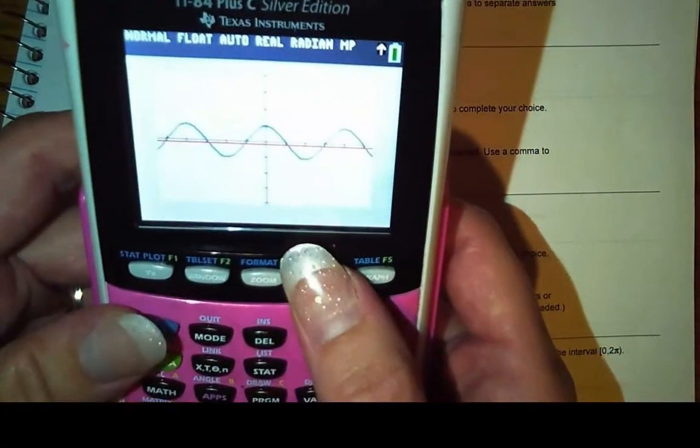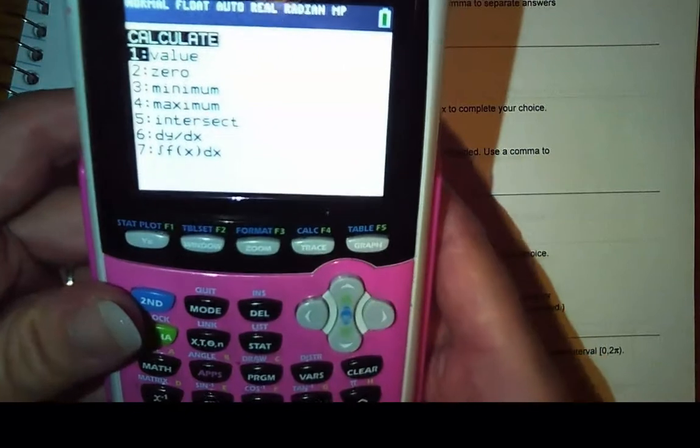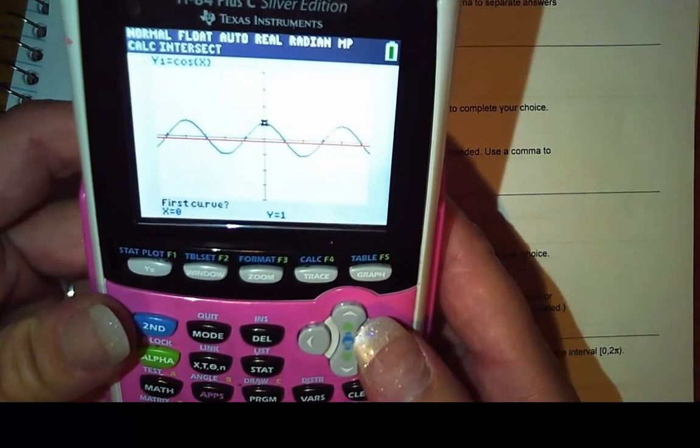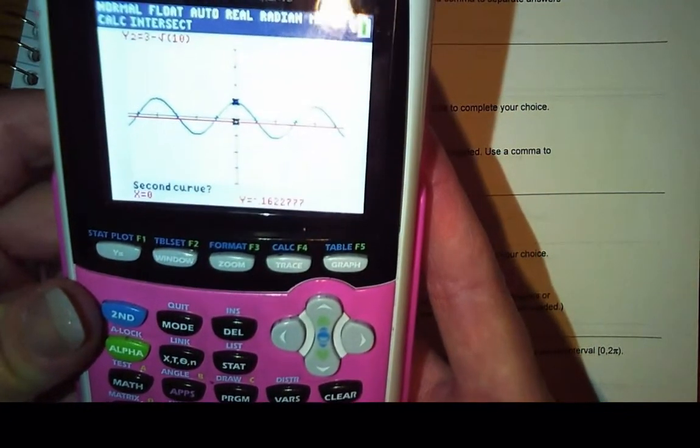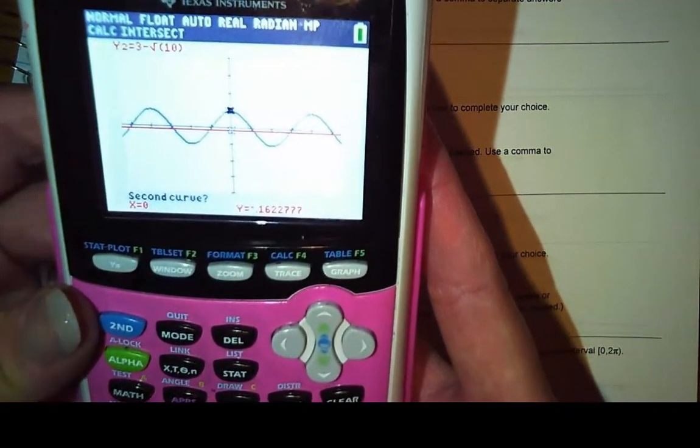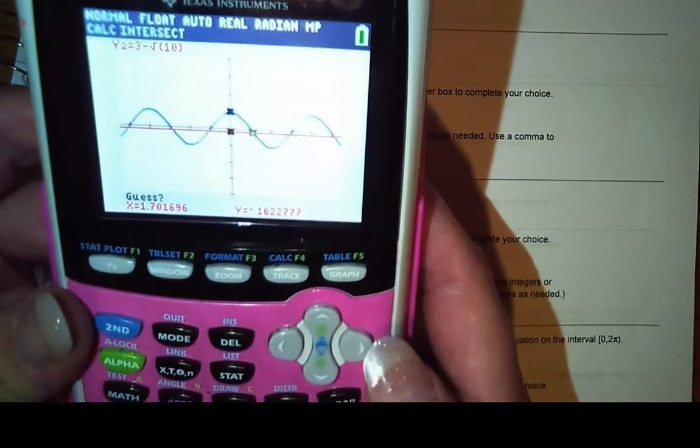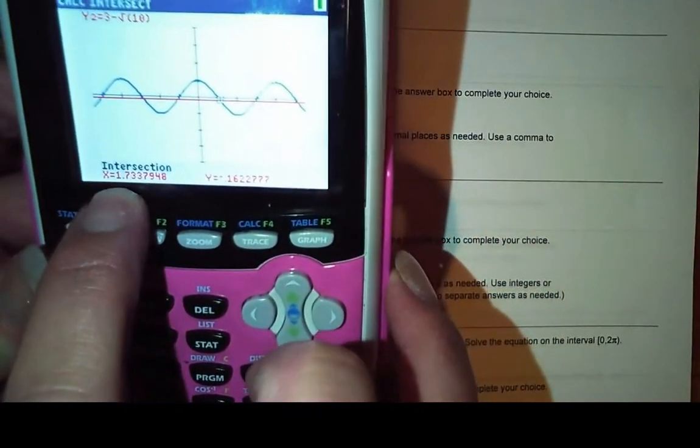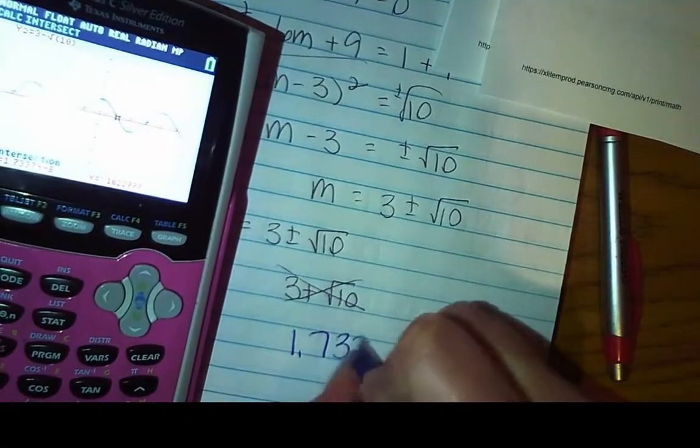So I'm going to hit second trace, which is going to take me to the calc menu, and I want to know where these two things intersect. So I'm going to choose option 5, which is intersect, and then by default it's going to say which is the first curve we're looking at, and it's going to go to y1. So that's why it's blinking on the cosine, so we're going to say yes. Hit enter, and then the second one, it's going to say what's the second curve we're interested in? And so by default it's going to go to y2, which is where I have the other value. So we're going to say yes again, and now it's going to say guess. So get as close to that intersection as you possibly can, and then hit enter, and then it's going to tell you there's an intersection where x is 1.7338. So I've got 1.7338, and then I don't know what I'm rounding this to. We are going to four decimal places.